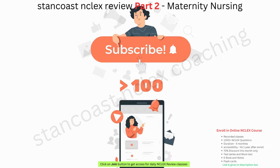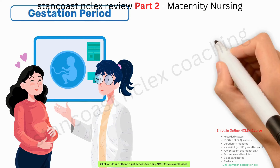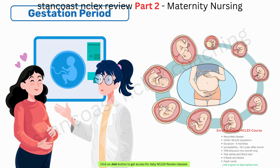The gestation period, often referred to as pregnancy, marks the remarkable journey from the fertilization of the ovum to the eagerly anticipated due date. This period typically encompasses around 280 days, but it is essential to recognize that it can vary significantly among individuals.